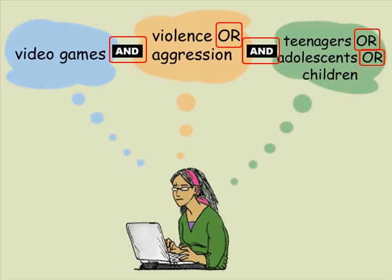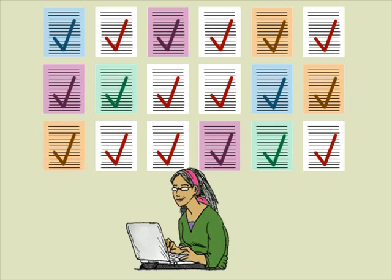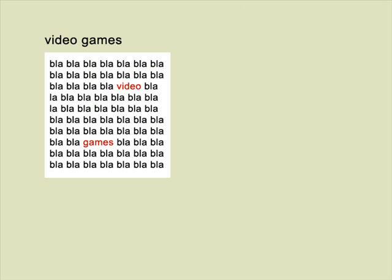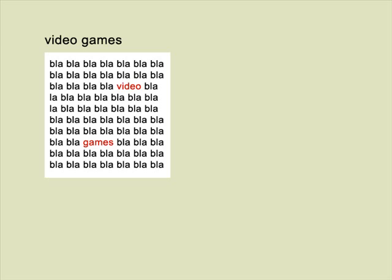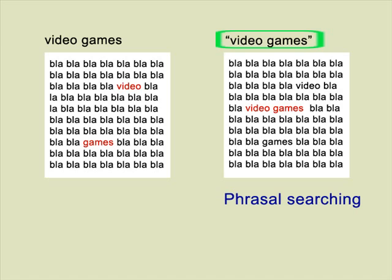Now I will explain two techniques that you can use in most databases to ensure that you'll be retrieving all of the relevant documents for your topic. The first is called phrasal searching. When one of your terms consists of more than one word, you want to make sure that the search engine finds your exact term and not each separate word in different locations. For instance, in some databases, if you enter 'video games' as is, it may retrieve documents that contain the word 'video' in one place and 'games' in another part of the document. By putting double quotes around the term 'video games', you will only retrieve documents containing the two words next to one another — in other words, documents that mention video games.